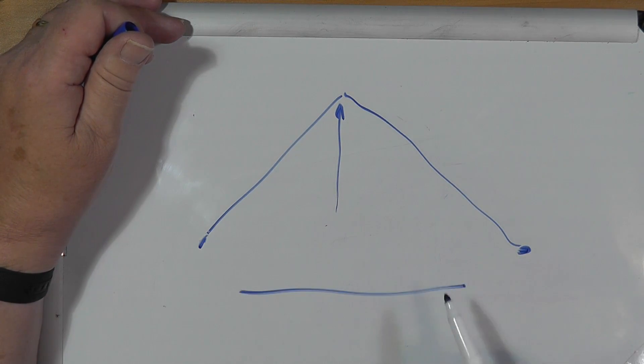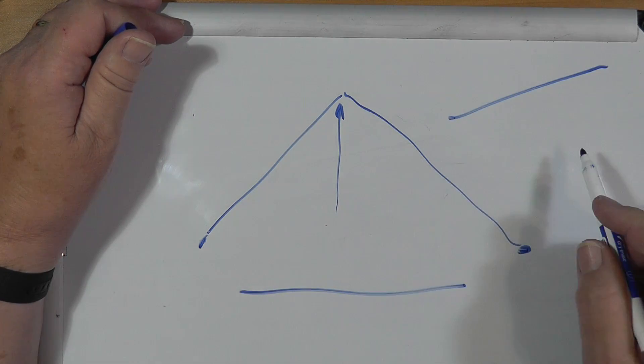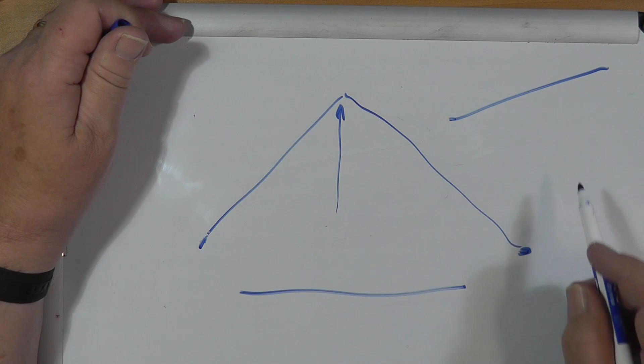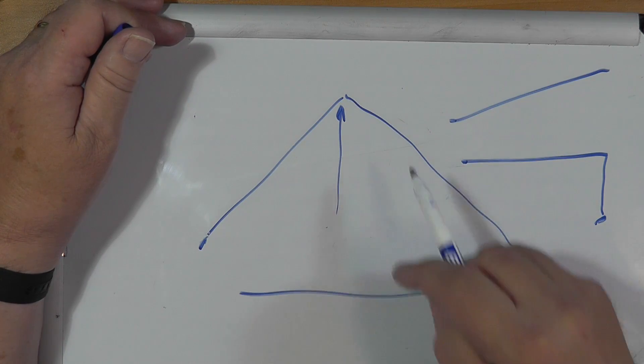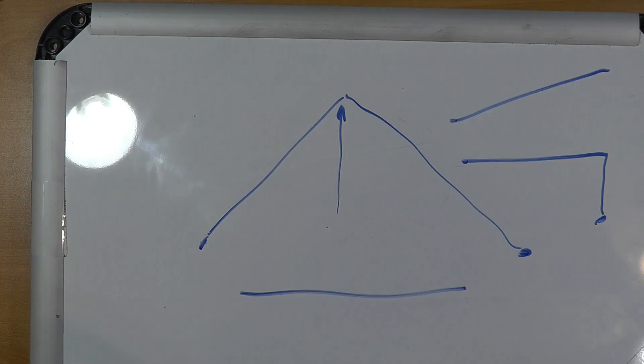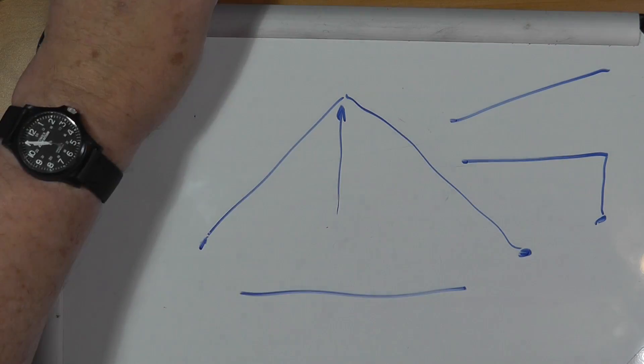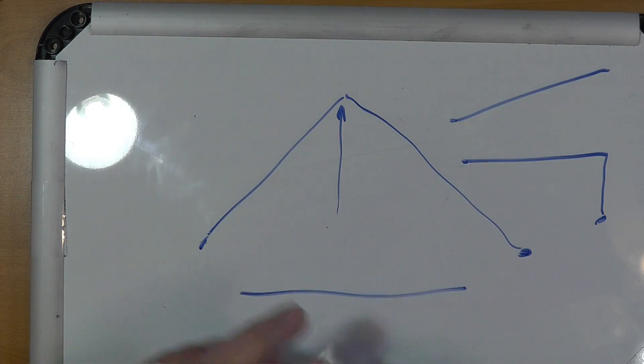So you can string it straight. You can put it in an inverted V. You can put it as a sloper. You can put it as an L with the feed right there. There are all different kinds of things that you can do with it. Just keeping in mind that it is fundamentally a dipole.